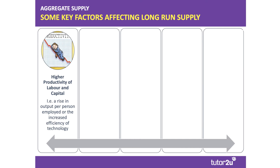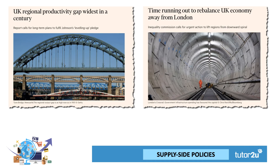There are five key factors affecting long-run supply. The first is productivity — both of labor and capital. Lifting output per hour worked or output per person employed is one of the key supply side aims for many countries, raising average productivity not just of the workforce but also of the machinery and other technologies used in production.